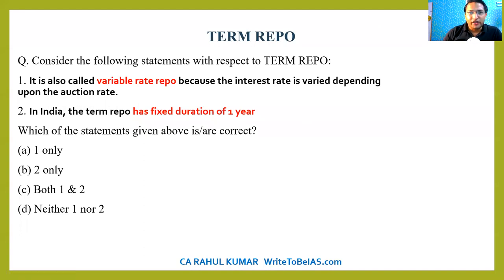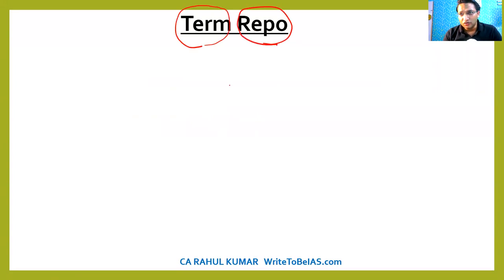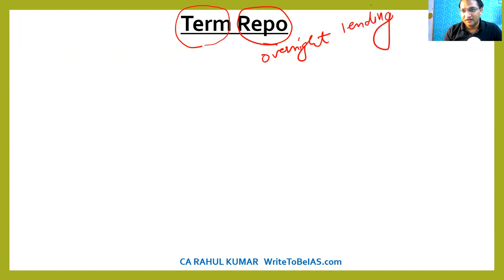The answer to this question is option A only. First of all, what is the meaning of term repo? Repo you already know — this is a mechanism of repurchase agreement. Normally under repo, overnight lending is done, so RBI gives the loan for overnight. The word 'term' basically means the duration of this loan is increased beyond one day.